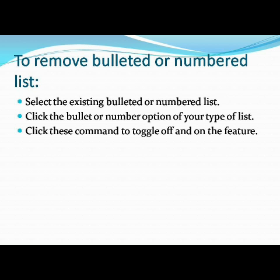How to remove a bulleted or numbered list? First, select the existing bulleted or numbered list. Next, click the bullet and numbering option. You can click the command to toggle it off and on. The first time you apply it, it will enable the on option. When you click again, it will go to the off option. So if you want a bullet, turn it on; if you don't want it, turn it off. This is how we toggle off and on to remove a bullet or numbered list.